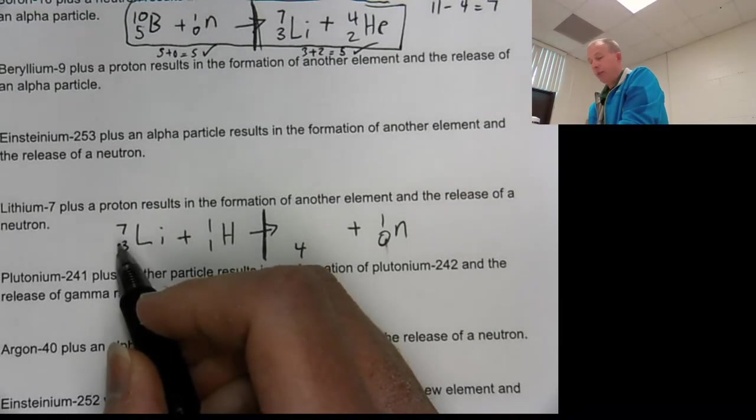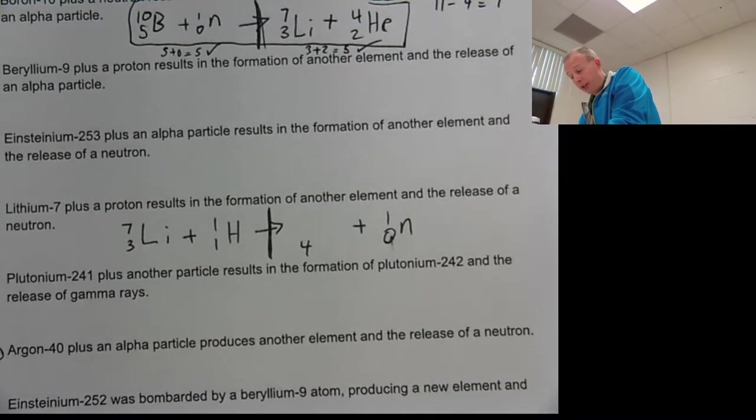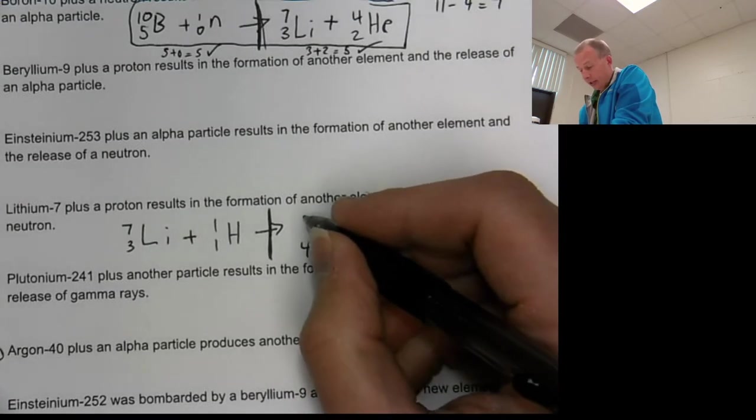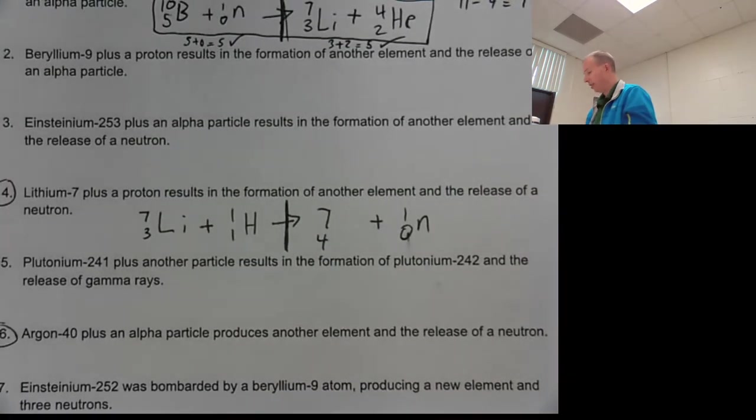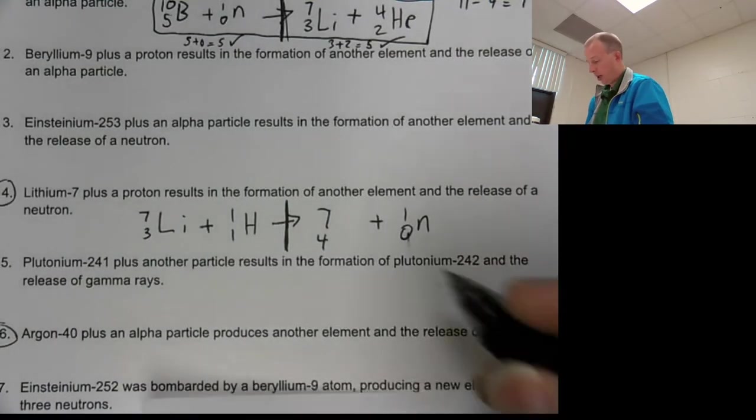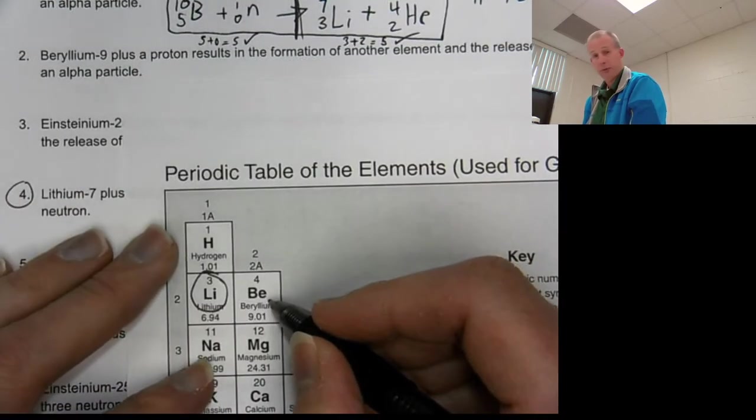So if we are turning this three into a four, because we're adding this proton, we also have to account by adding one to this top mass number. So this should, in theory, become an eight. But we have a neutron being released over here. So it's kind of weird. That seven doesn't actually change. It just remains a seven. And that's the part that can be a little confusing to people.